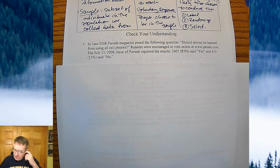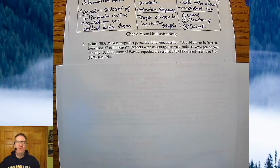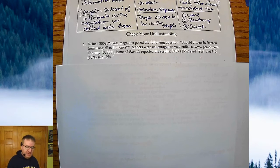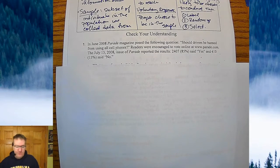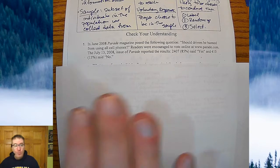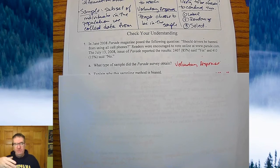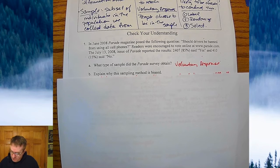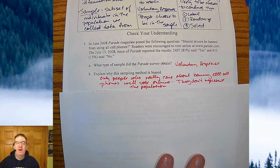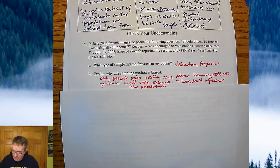Parade Magazine posed the question: should drivers be banned from using cell phones? Readers were encouraged to vote online at parade.com, and the July 13, 2008 issue reported the results: 2,407 people, or 85%, said yes, and 410, or about 15%, said no. This is an example of voluntary response — because people are choosing to go to the website parade.com and respond. This is biased because only people who really care about this issue — about cell phones — will vote online. They don't represent the entire population.